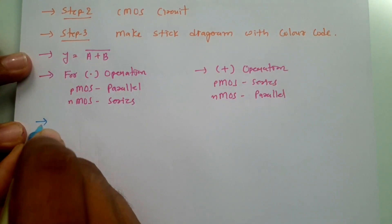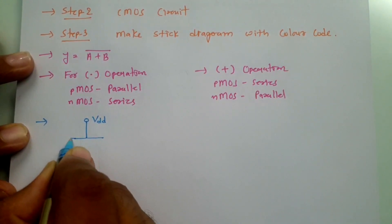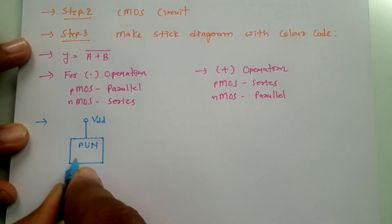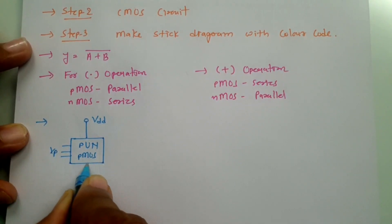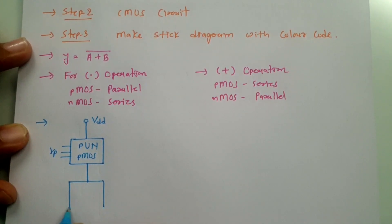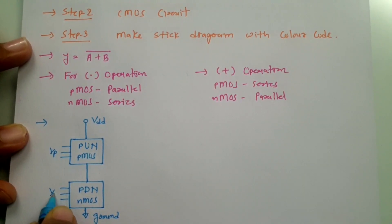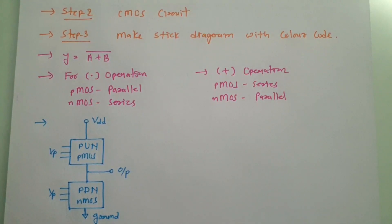When you form any circuit using CMOS, the structure has VDD supply at the top, followed by a pull-up network made up of PMOS transistors with multiple inputs. Below that is the pull-down network made up of NMOS transistors connected to ground, also with multiple inputs. The output is taken between the pull-up and pull-down networks.